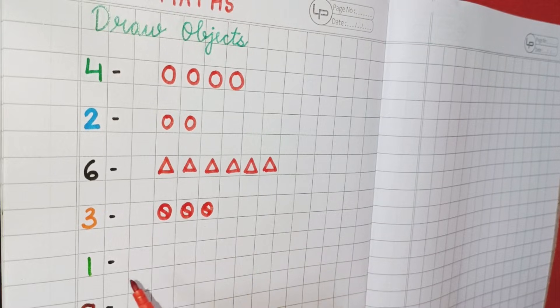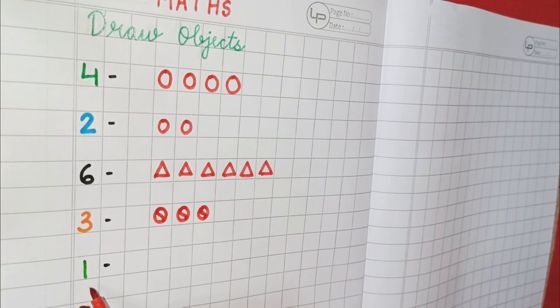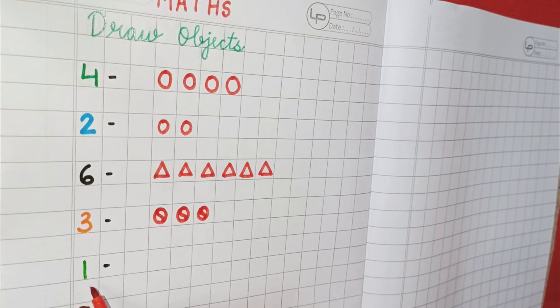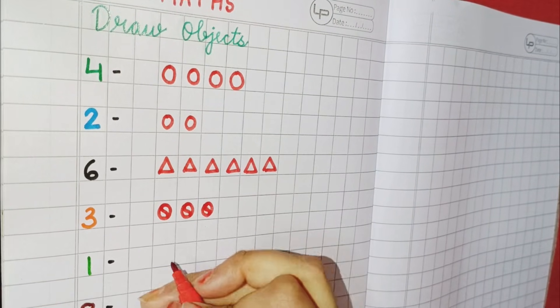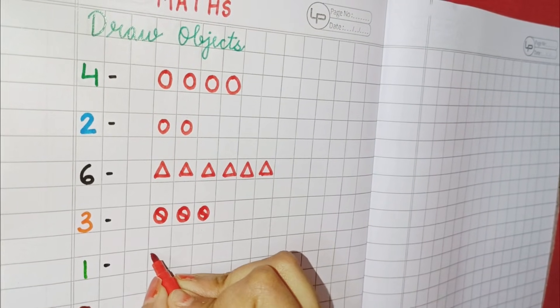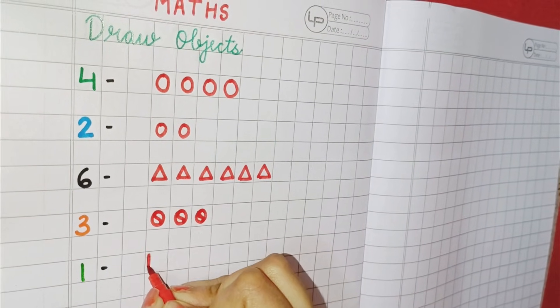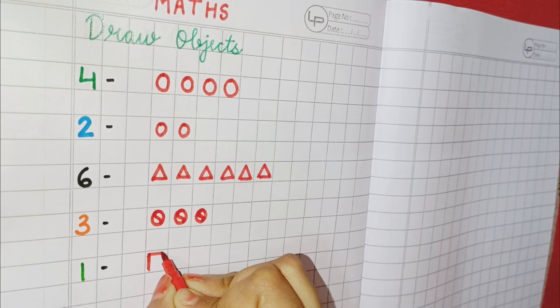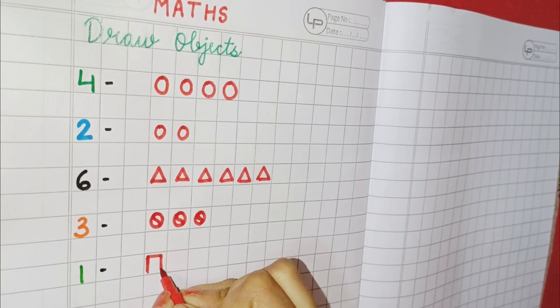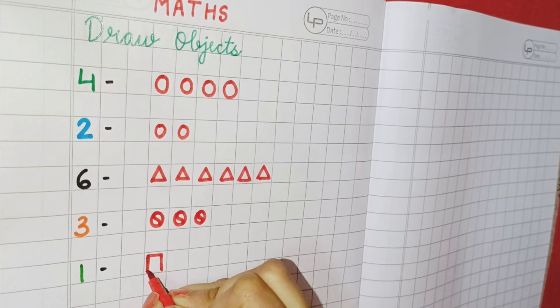Now here is number one. So you have to draw your one object. One.